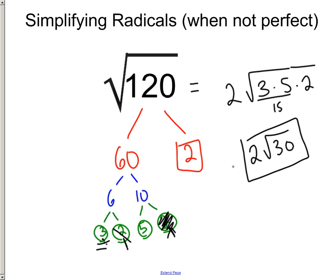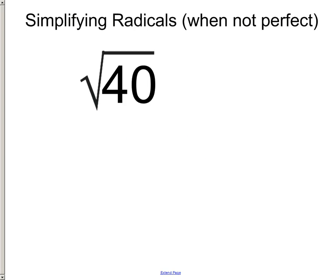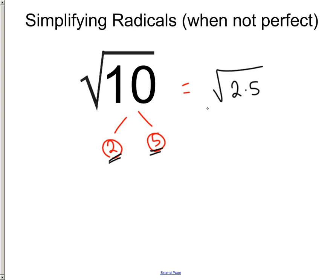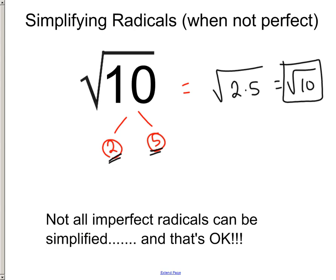There are two special scenarios to understand. First, let's try radical 10: 2 times 5. This 2 sees no one it can trust, and this 5 sees no one it can trust, so they're just sitting in jail together. Nobody makes it outside. What's 2 times 5? 10. So the answer is just radical 10. Sometimes you'll come across a scenario where you can't simplify the radical at all — and that's fine. Just write down the radical itself and move on.